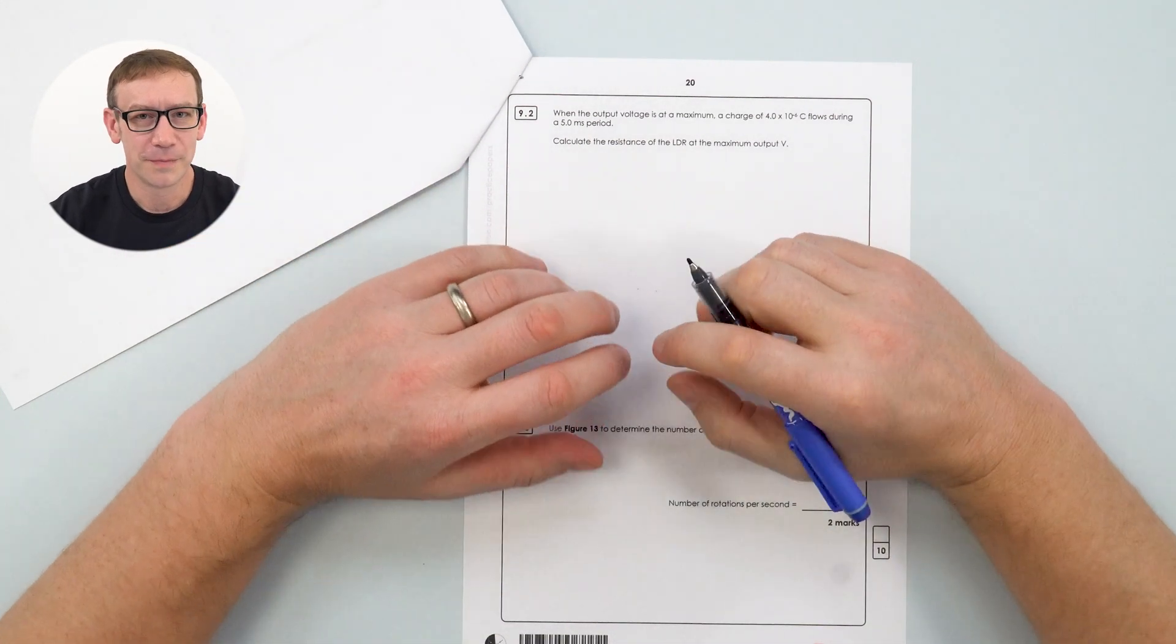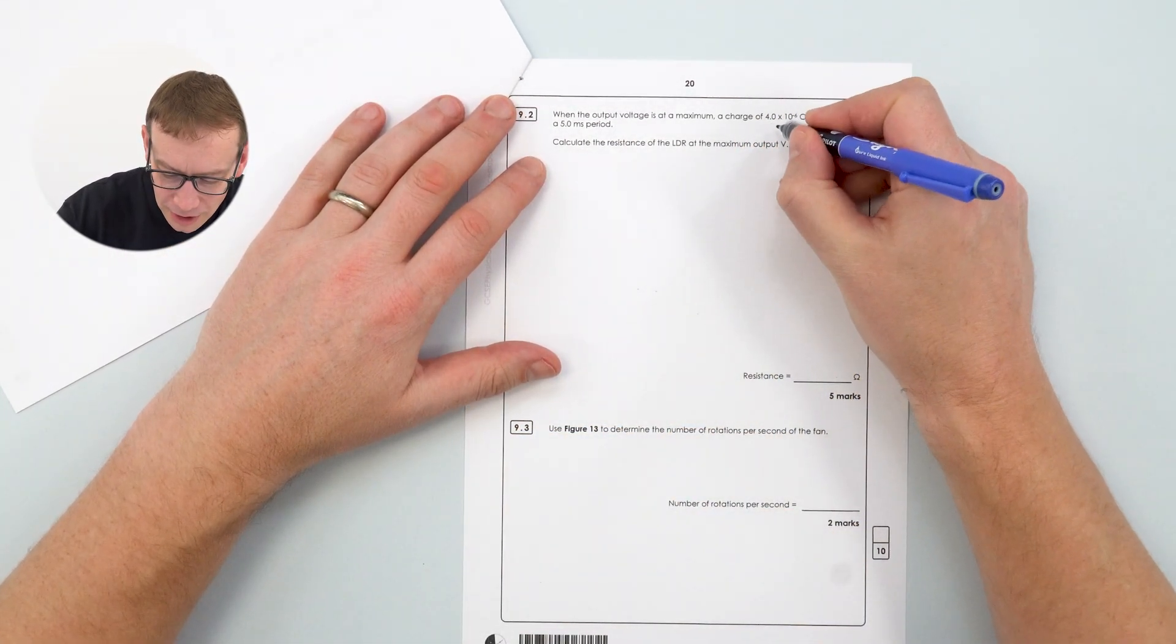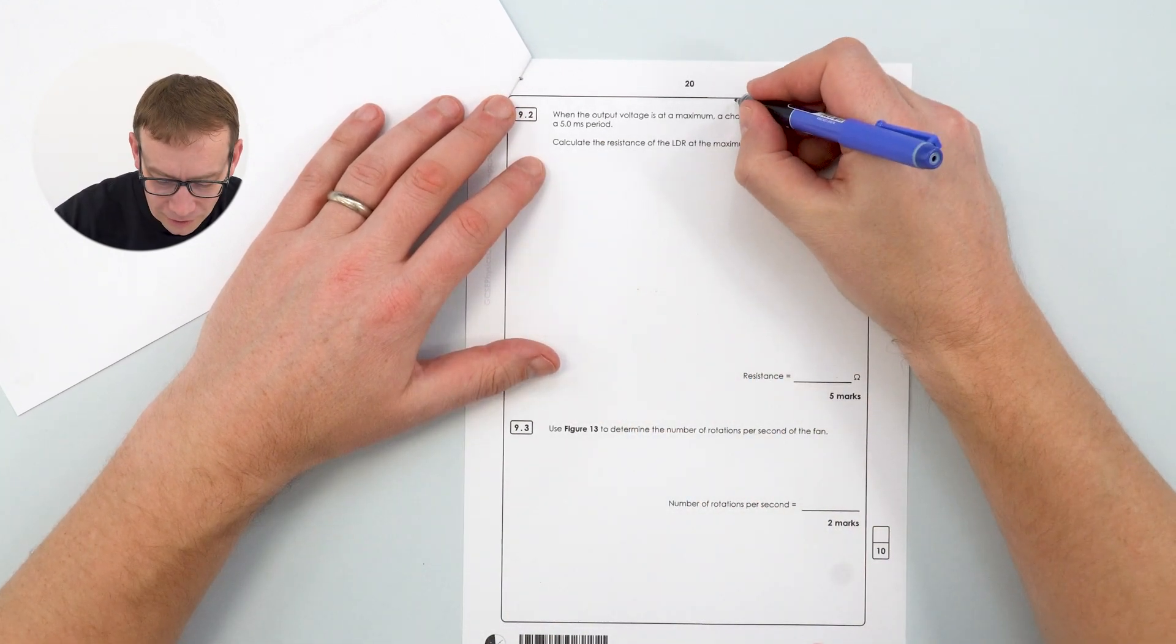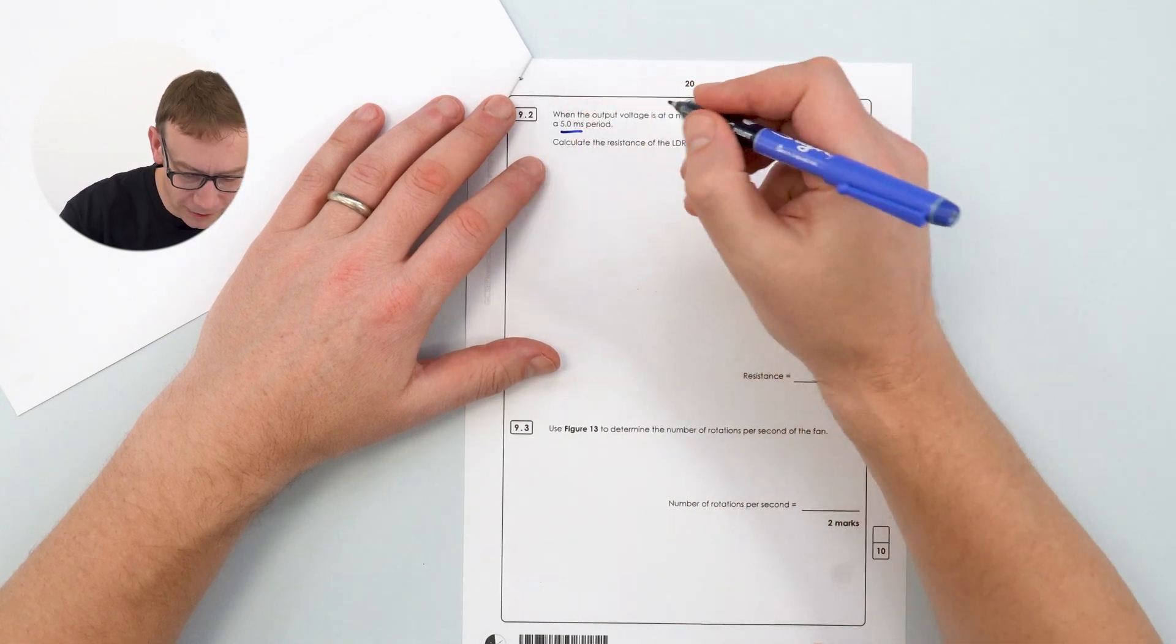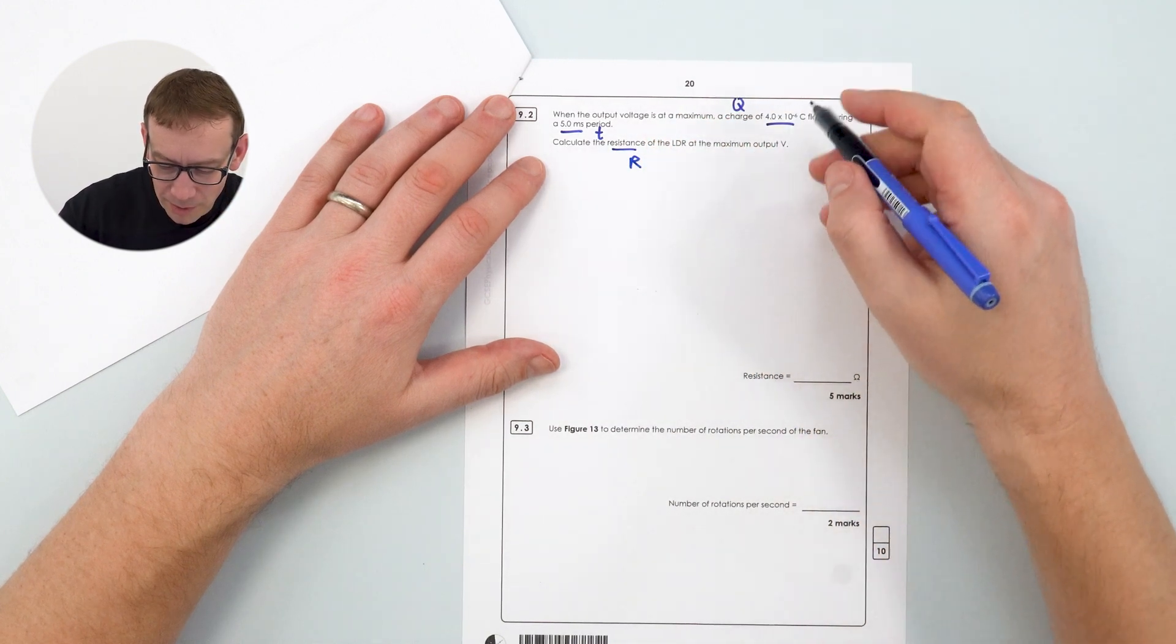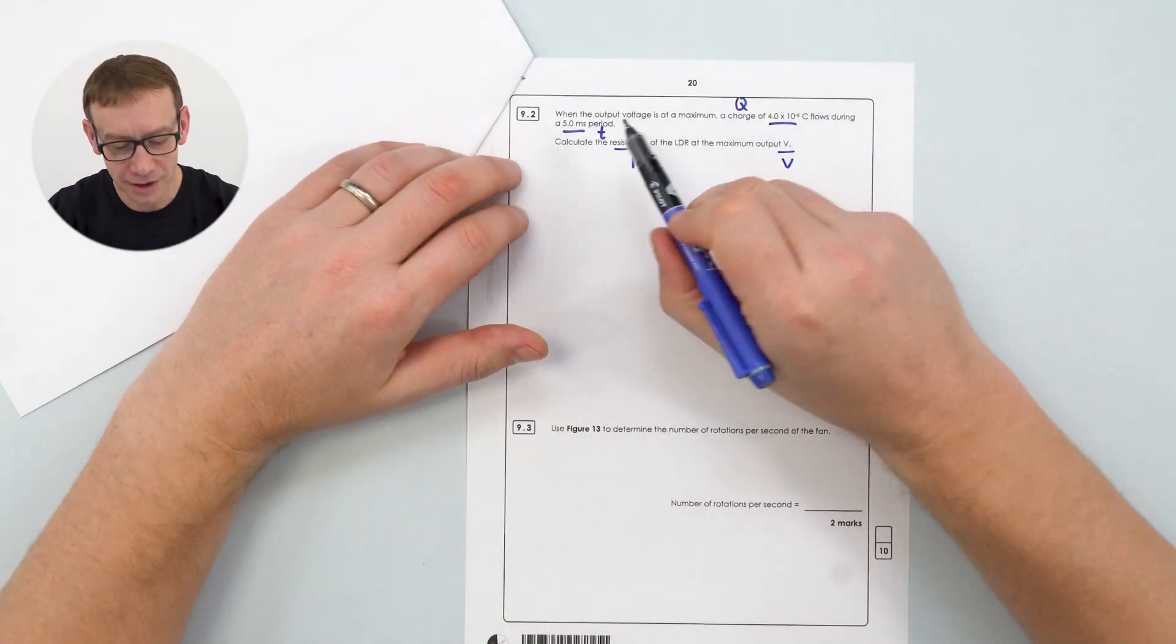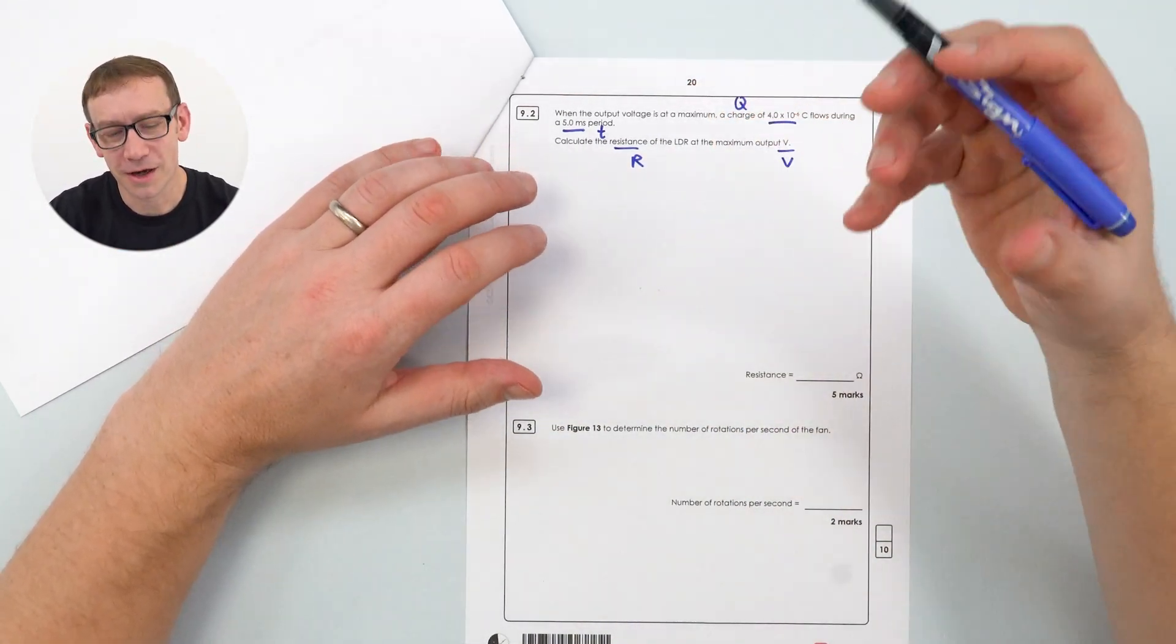Now my first step will be to look at the question and try and identify some of the numbers. So we've got a charge which is written down here, I'm just going to underline that. Charge has got the symbol Q, we've got a time of five milliseconds, so that's T, and we want to work out the resistance R at a maximum output V. Okay so what I've started to do is just underline key bits of data, I've put down the symbol to represent that quantity.